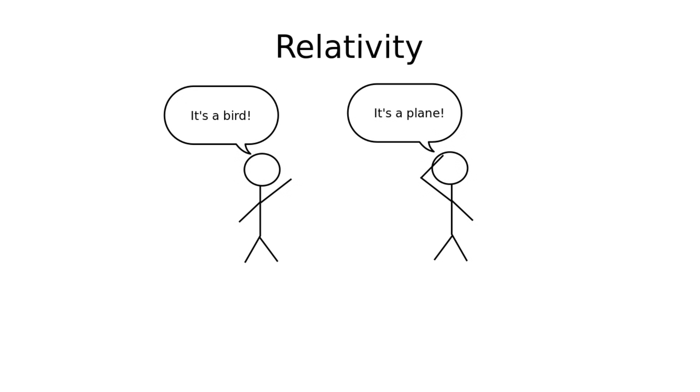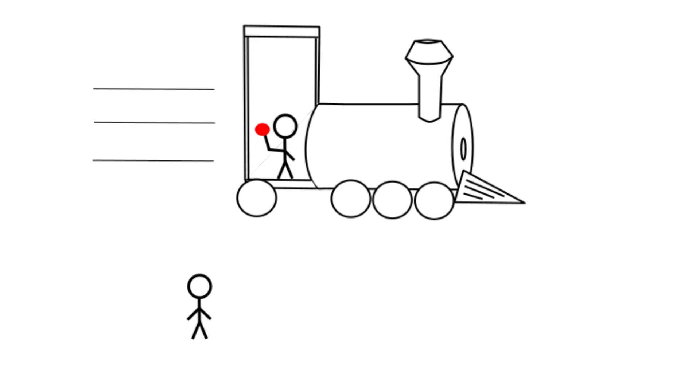For example, take a situation where one person is on a moving train and another person is standing outside the train. If the person inside the train throws a ball, the two people will give two different accounts of the same event. The person on the train will say that the ball was moving slower and traveled less distance than the person outside the train.